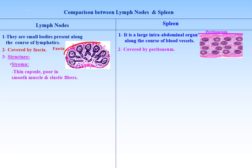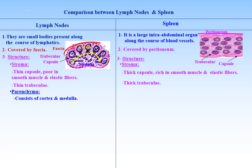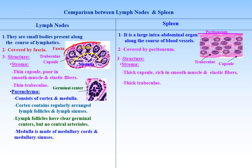Structure. Stroma of lymph nodes is formed of a thin capsule poor in smooth muscles and elastic fibers, with thin trabeculae. Stroma of the spleen is formed of a thick connective tissue capsule rich in smooth muscle fibers and elastic fibers, with thick trabeculae. Parenchyma of the lymph node is formed of cortex and medulla. Cortex contains regularly arranged lymph follicles and lymph sinuses. Lymph follicles have clear germinal centers but no central arterioles. Medulla is made of medullary lymphatic cords and lymph sinuses, formed mainly of lymphocytes and plasma cells.